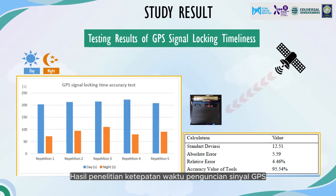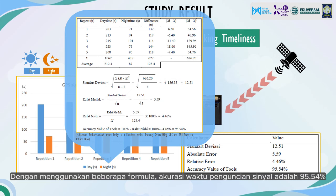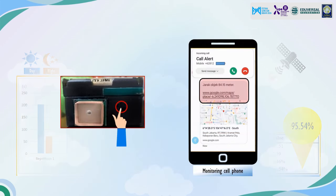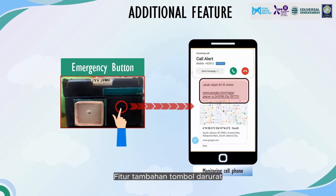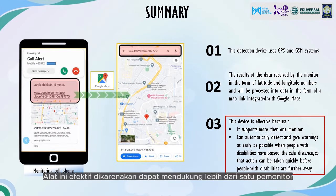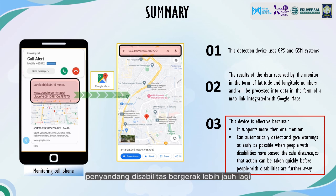Research results on the timeliness of GPS signal locking, conducted during the day and night with five-time repetition: using the accuracy formula, the GPS signal locking time accuracy is 95.54%. An additional emergency button feature is also included — if pressed, it will send an automatic warning and SMS link with GPS location map. This device is effective because it supports multiple monitors and can detect and give warnings as early as possible when people with disabilities have passed the safe distance, enabling a quick response before they are further away.